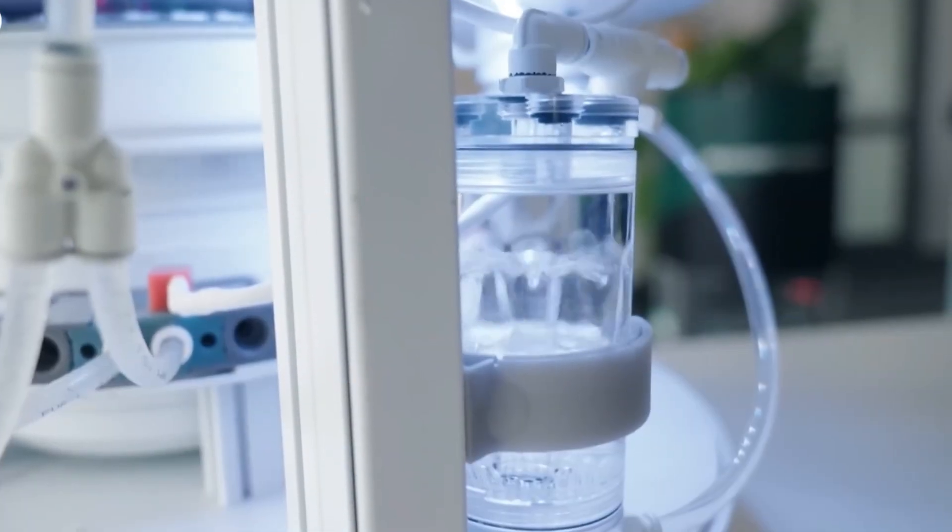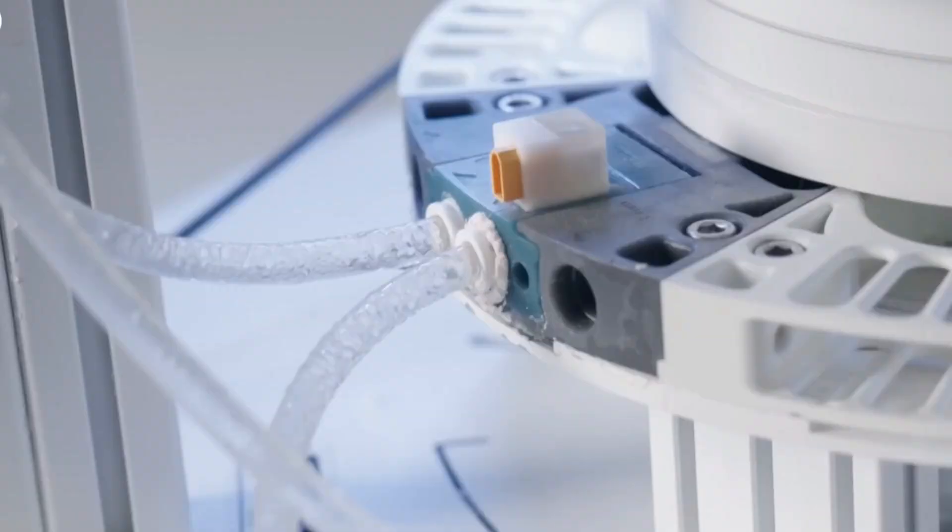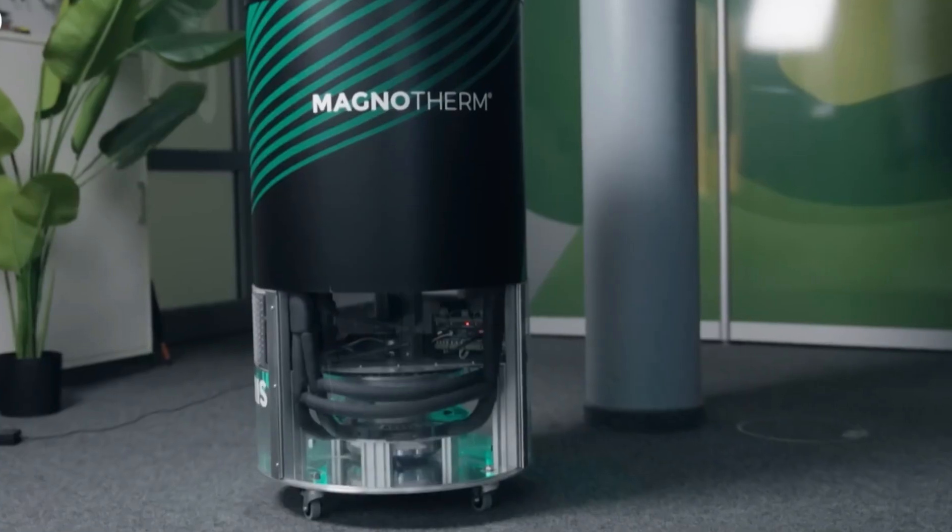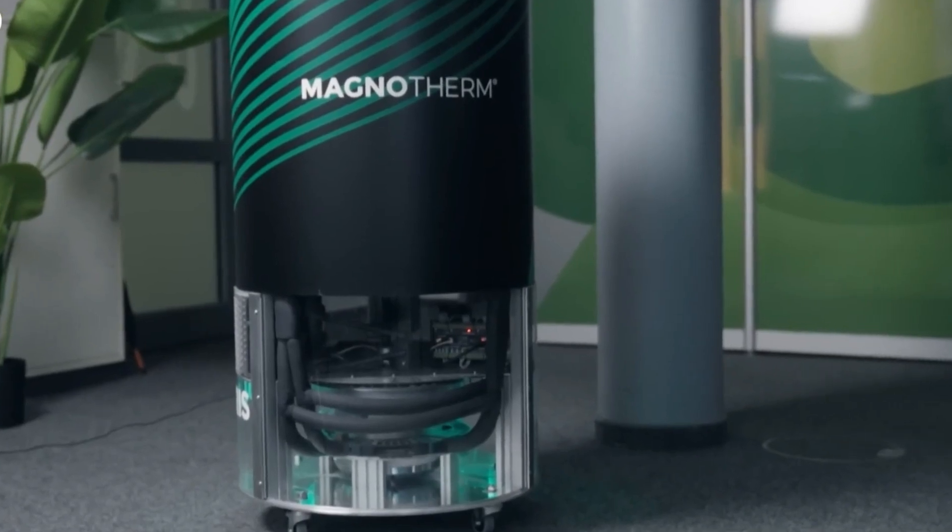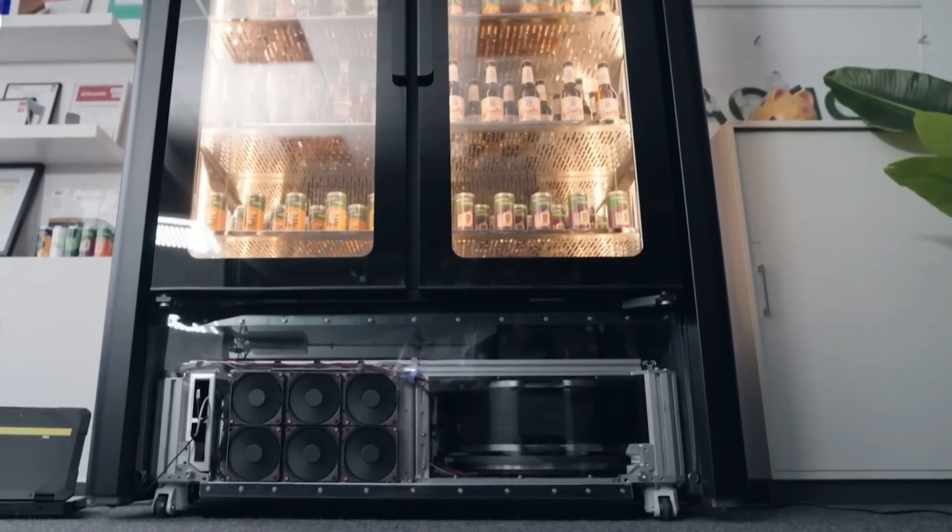Heat removal: A working fluid, often water, absorbs this heat and carries it away. Demagnetization: Removing the magnetic field lets the domains fall back into disorder, cooling the material down.